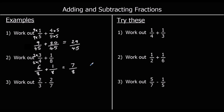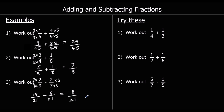Question three: two-thirds take away two-sevenths. We need to make the denominators the same. Multiplying the top and bottom of two-thirds by seven, and the top and bottom of two-sevenths by three, gives both denominators as twenty-one. So fourteen over twenty-one take away six over twenty-one. Fourteen take away six is eight, so the answer is eight over twenty-one.